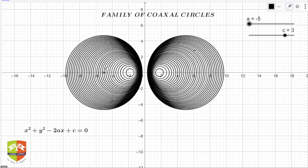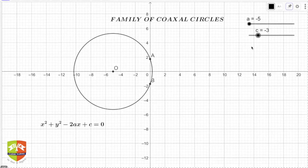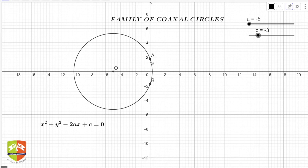Now what happens if c is less than 0? When c is negative, you can clearly see the circle is intersecting the y-axis at two points A and B.